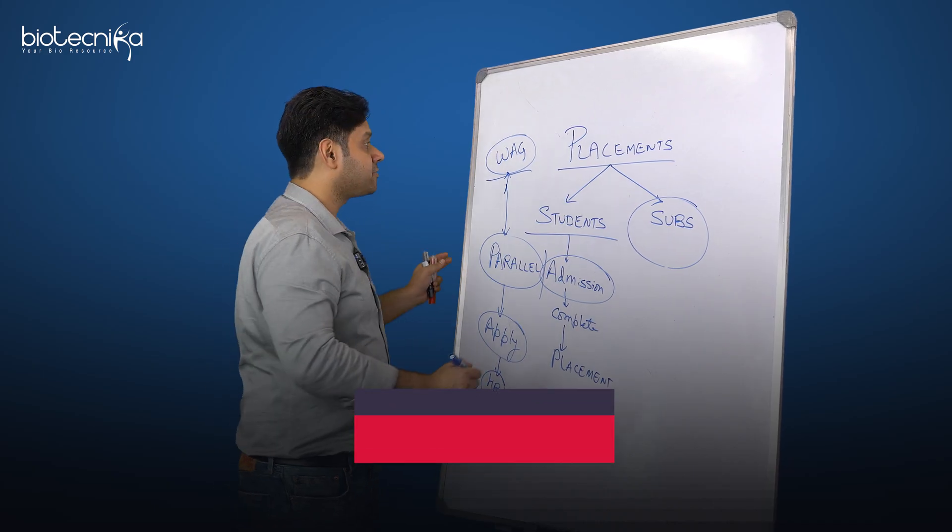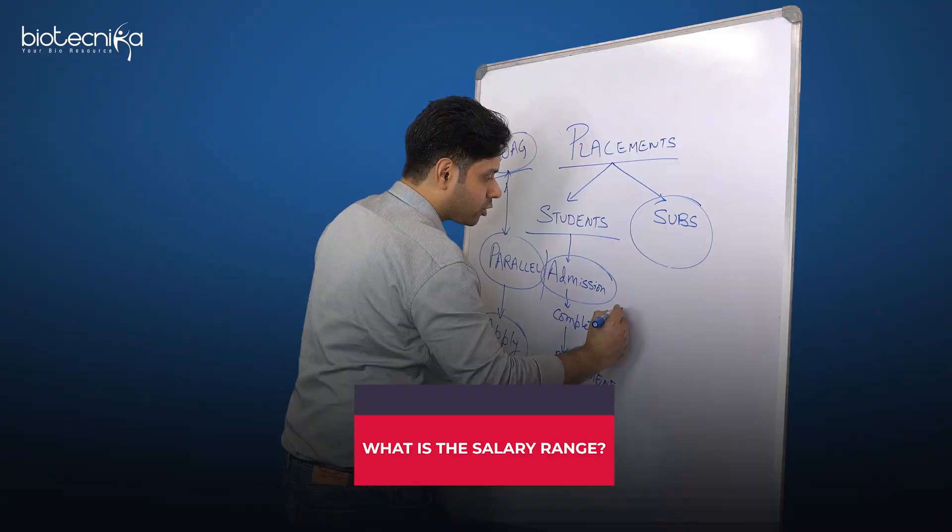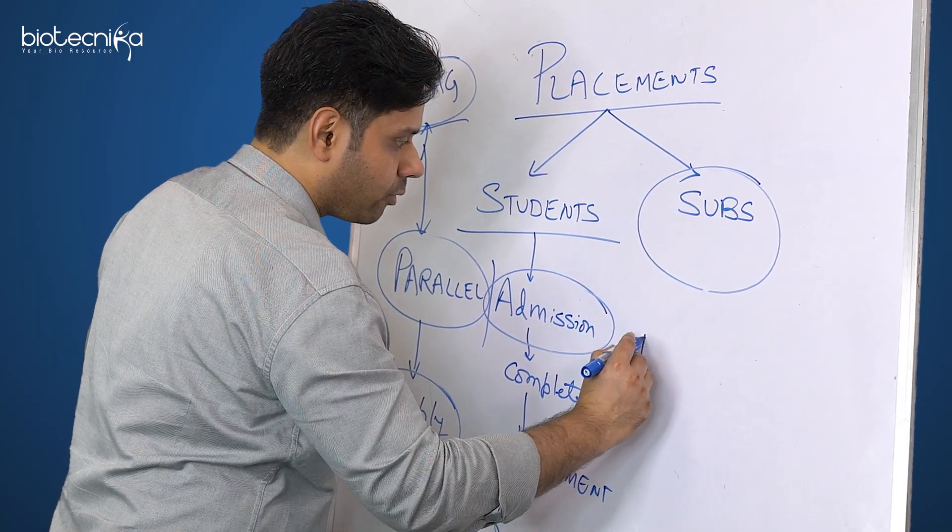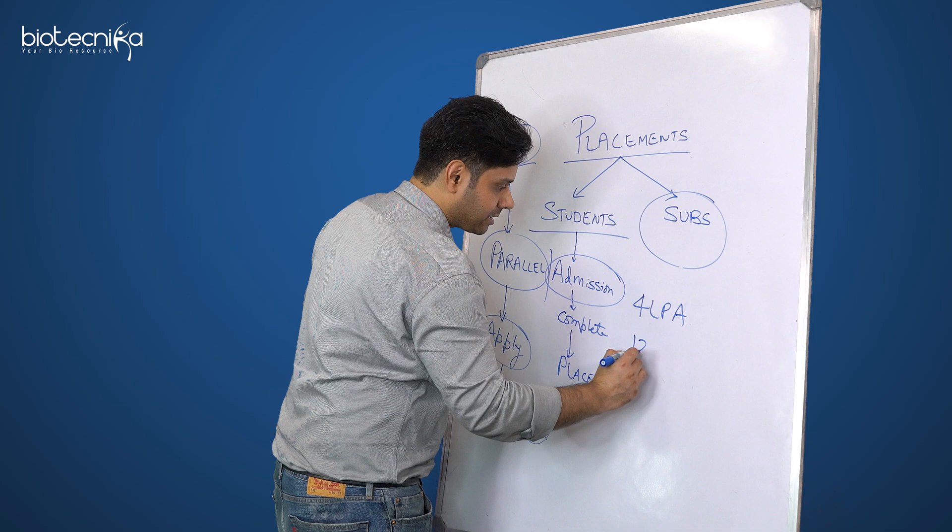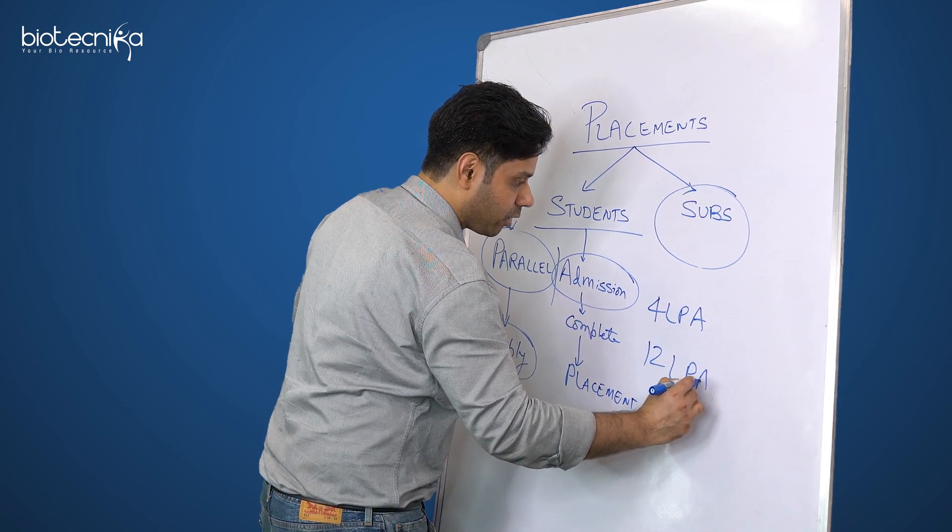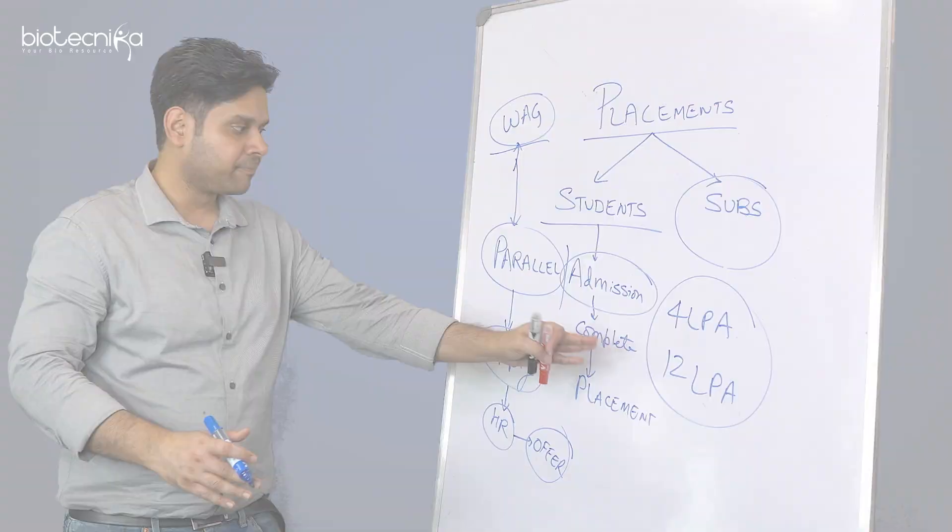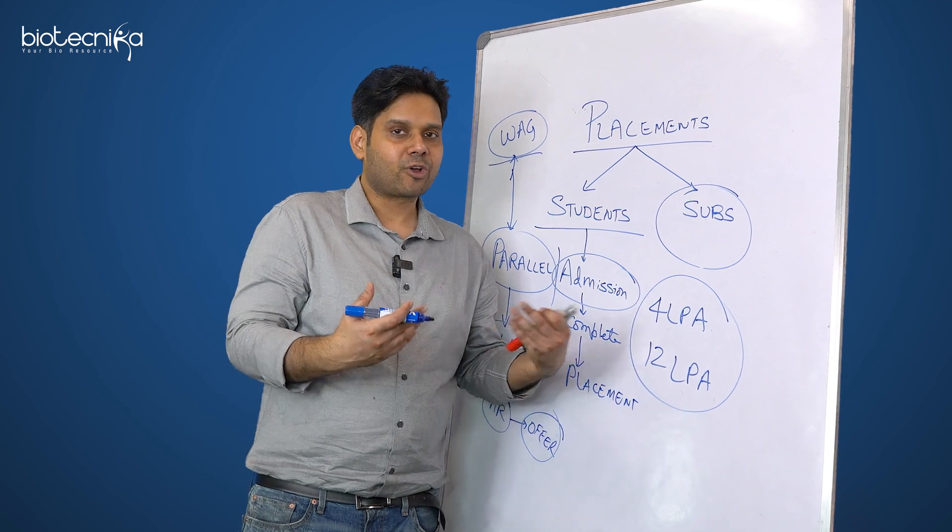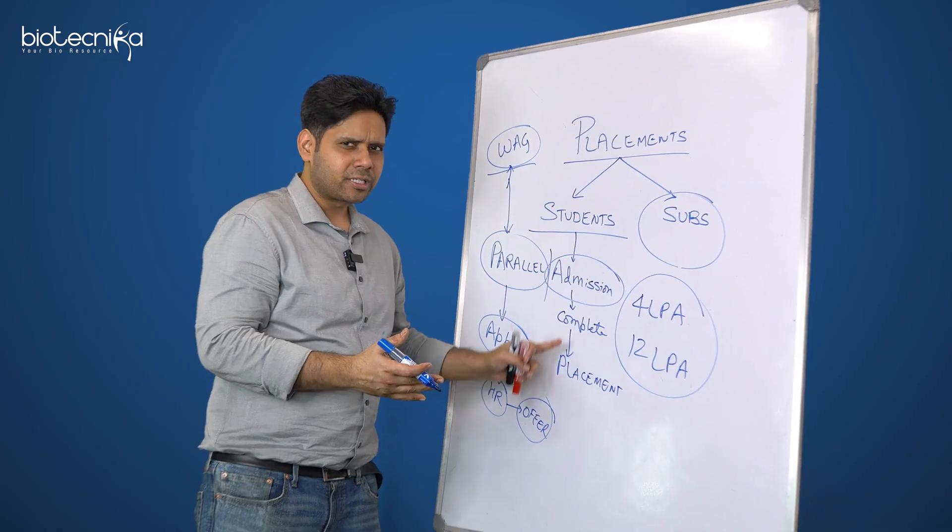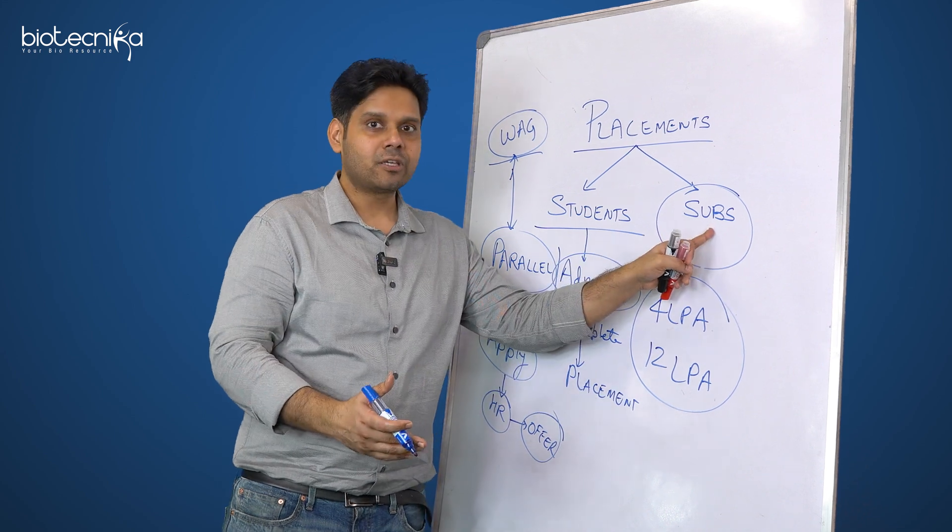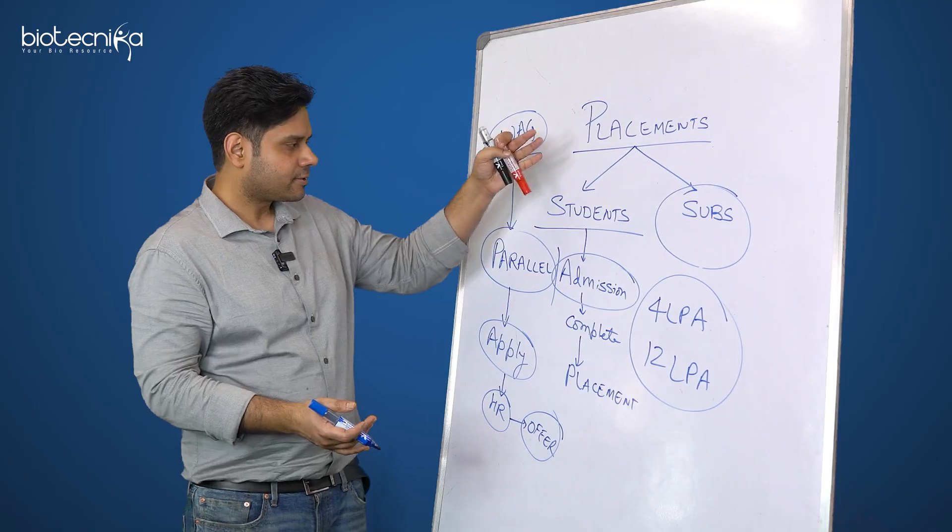What is the salary range we are looking at? Right now it is starting somewhere around 4 lakhs per annum and so far we have placed somebody at 12 lakhs per annum also. So this is the range in which we are able to place currently. Of course we have requirements where companies are ready to give 24 lakhs per annum but they're asking experience which students might not have, but then that is when we knock our subscribers' doors.